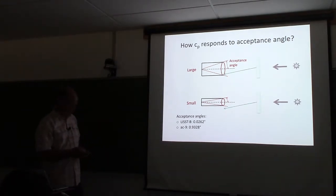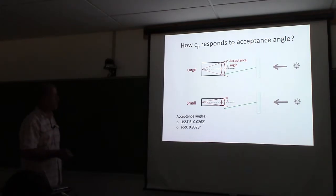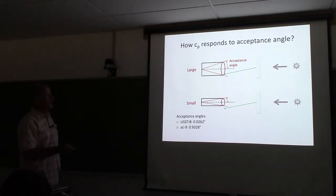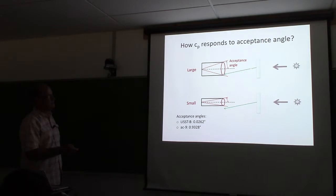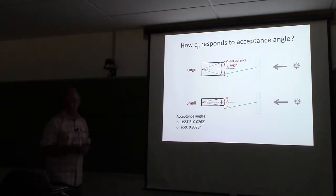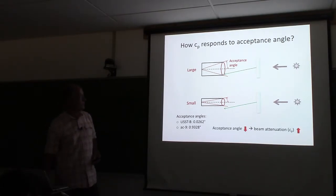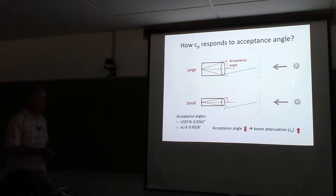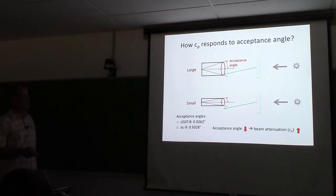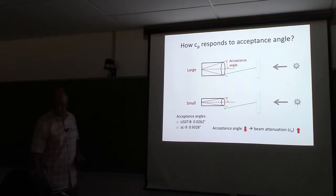If you put in a filament of light and get interaction with a filament of different density water, with the larger acceptance angle instrument the light gets bent a bit but is still viewed as transmitted light. With the LISST, it gets bent a bit and now it's no longer transmitted light. So as the acceptance angle goes down, your interpreted beam attenuation goes up, especially in the presence of these Schlieren.